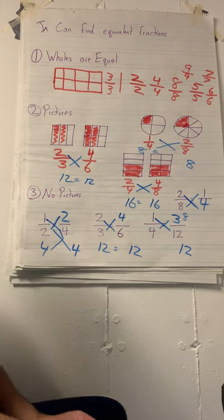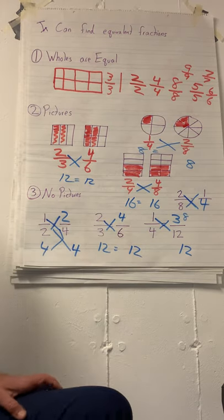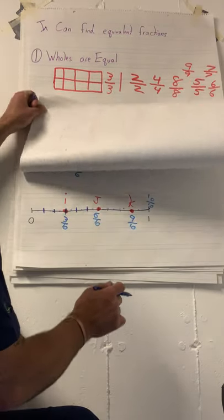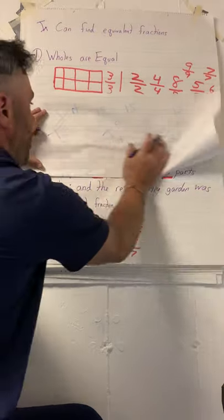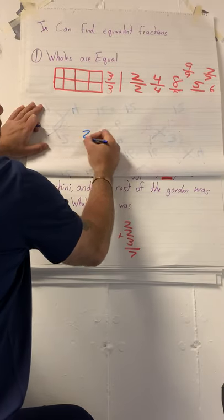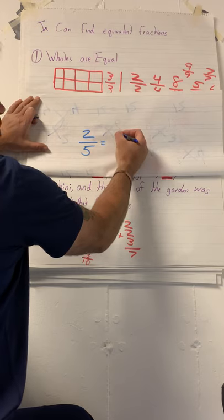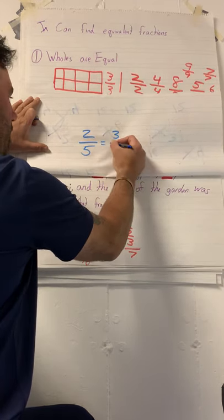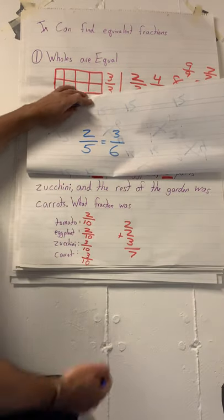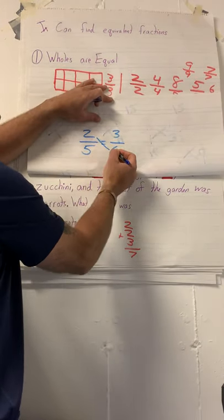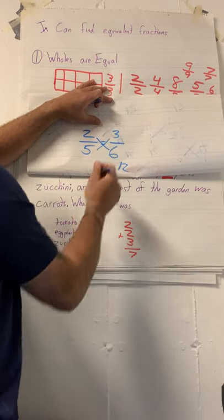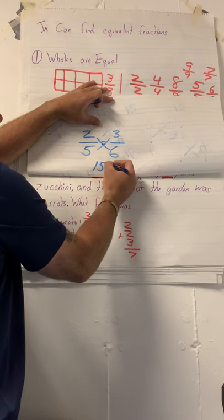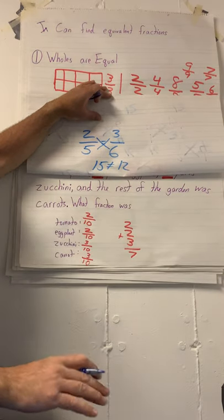Now, some of you guys are probably wondering, what if it wasn't equal? What would happen? Let me show you. Say I had two fifths equals three sixths. Is that true? And then if it wasn't true, it would be like two times six is twelve. Five times three, five, ten, fifteen. Fifteen does not equal twelve. So those are not equal.